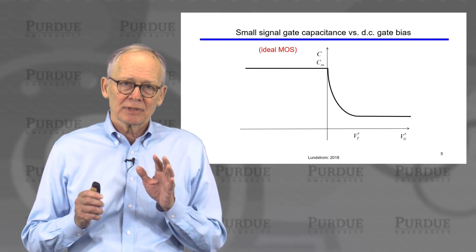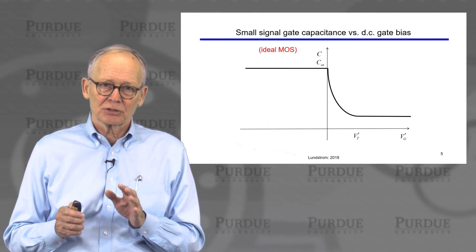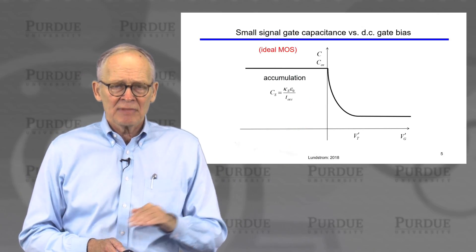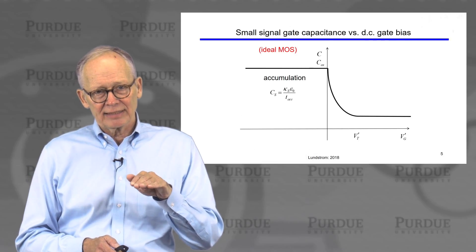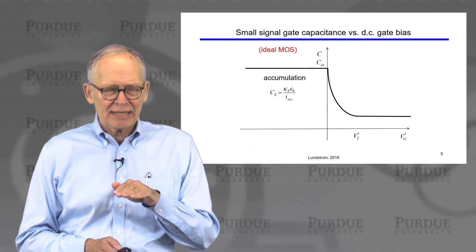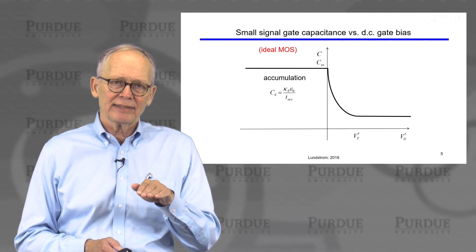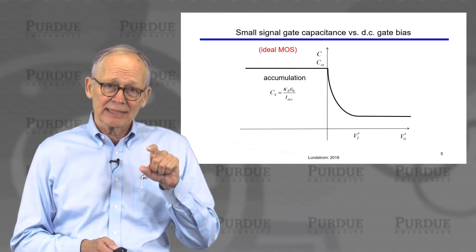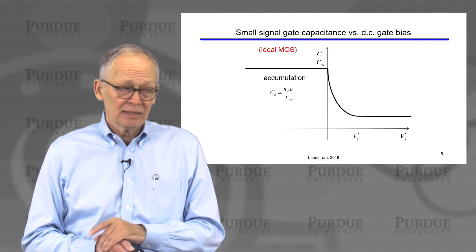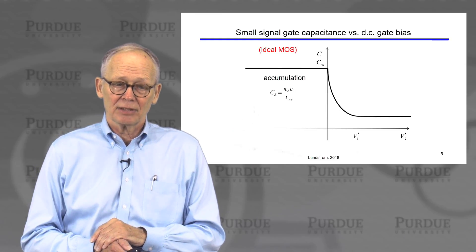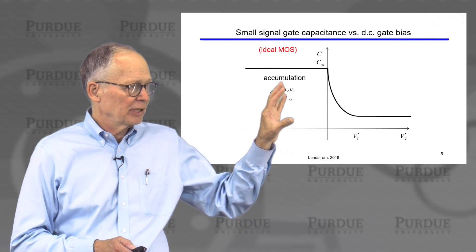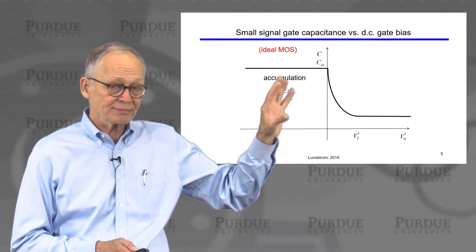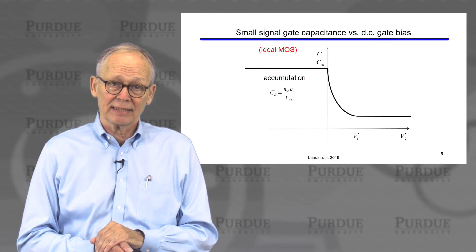What would an ideal capacitance versus voltage curve look like? If I apply a negative voltage and I'm in accumulation, I have a metallic plate on top of the silicon dioxide insulator, with a large number of holes piling up right at the interface just below the oxide. That's like two metal plates around the silicon dioxide — it's the capacitance of the oxide layer itself. So in the accumulation regime, the capacitance measured is the capacitance of the oxide alone.